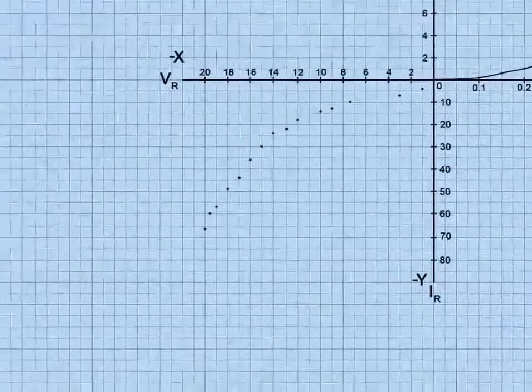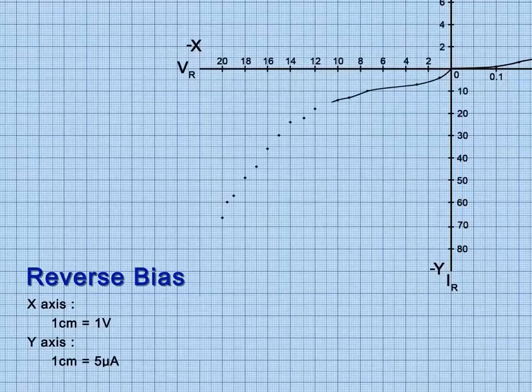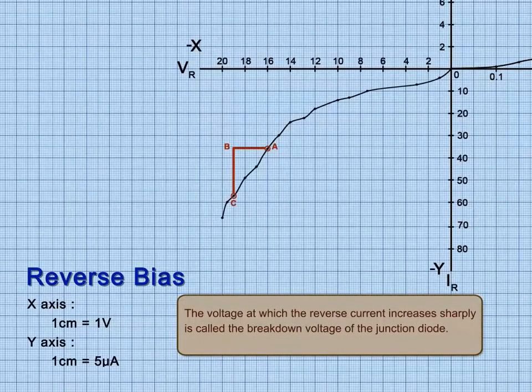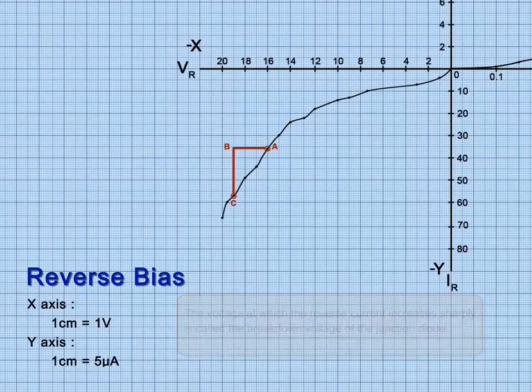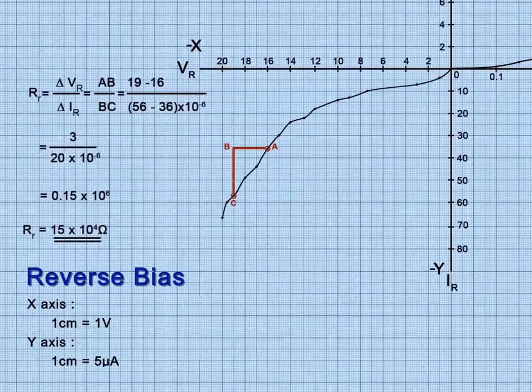In reverse biasing, when the reverse bias increases, there is a very small reverse current flow which remains almost constant, independent of the bias voltage. But when reverse bias increases to a sufficiently high value, the reverse current suddenly increases to a large value. This voltage at which the reverse current increases sharply is called the breakdown voltage of the junction diode. Calculate the slope in the upper region of the graph where it takes a curve. Note that the value of reverse bias resistance is of the order of 10 raised to 6 ohms, as the diode offers more resistance in the reverse bias. This value is also referred to as the dynamic value of resistance in reverse bias.